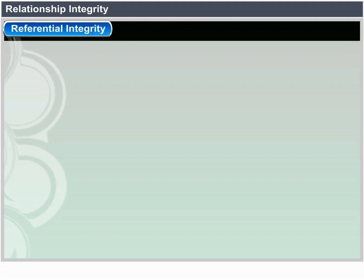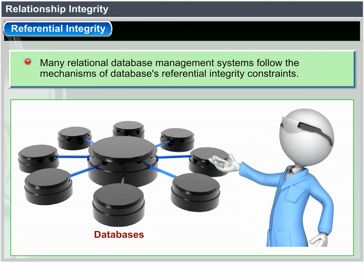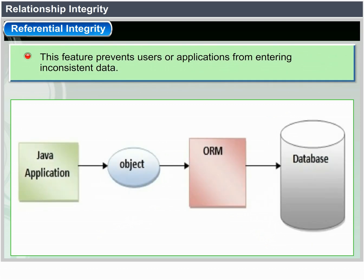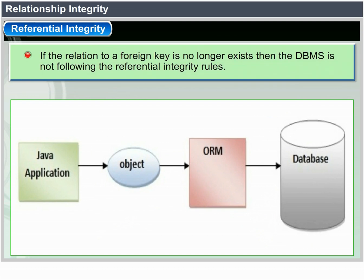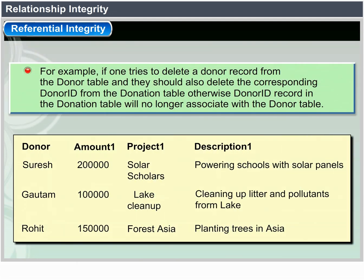Relationship integrity — referential integrity: many relational database management systems include mechanisms that enforce referential integrity, which is a measure of data consistency. Referential integrity is violated when the relation to which a foreign key refers no longer exists. For example, if a donor is deleted from the donor table without deleting corresponding donations from the donation table, the Donor ID in the donation record would refer to a non-existent donor.